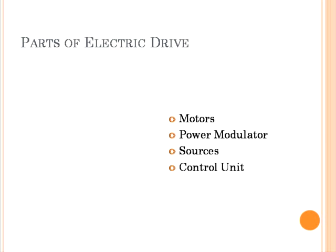Wound rotor motors are more expensive than squirrel cage motors; their maintenance needs, although more than squirrel cage motors, are much less compared to DC motors, and they are also available in high power ratings. Wound field and permanent magnet synchronous motors have a higher full-load efficiency and power factor than induction motors. Wound field motors can be designed for higher power ratings than induction motors; however, compared to squirrel cage induction motors they have higher cost and size for the same rating and require more maintenance. Because of the numerous advantages of AC motors, AC drives have succeeded in replacing DC drives in a number of variable-speed applications.